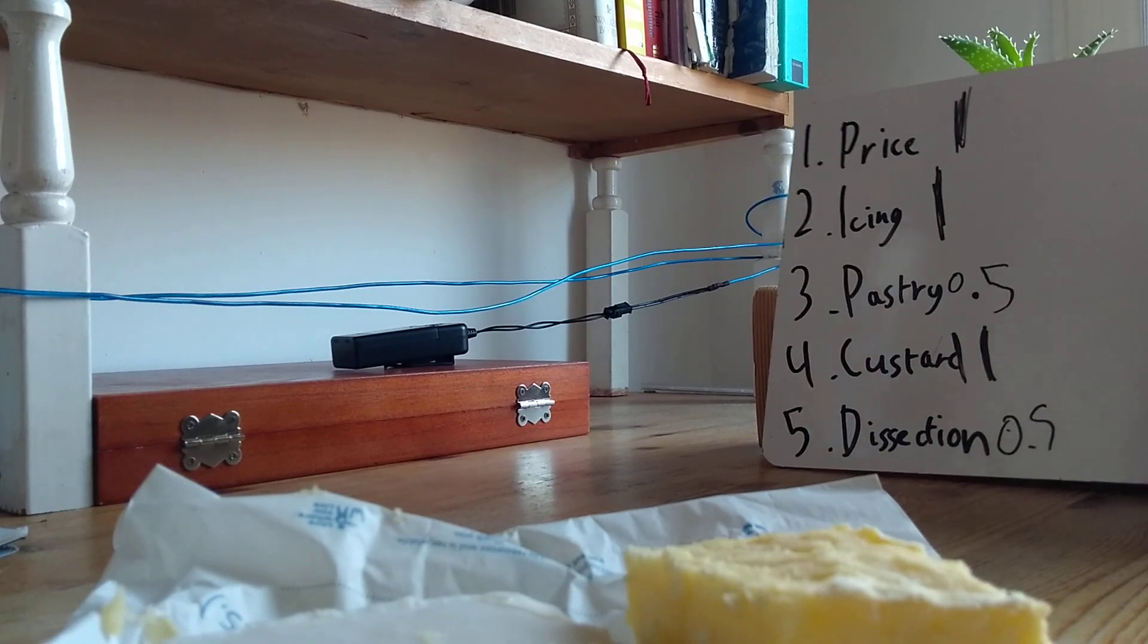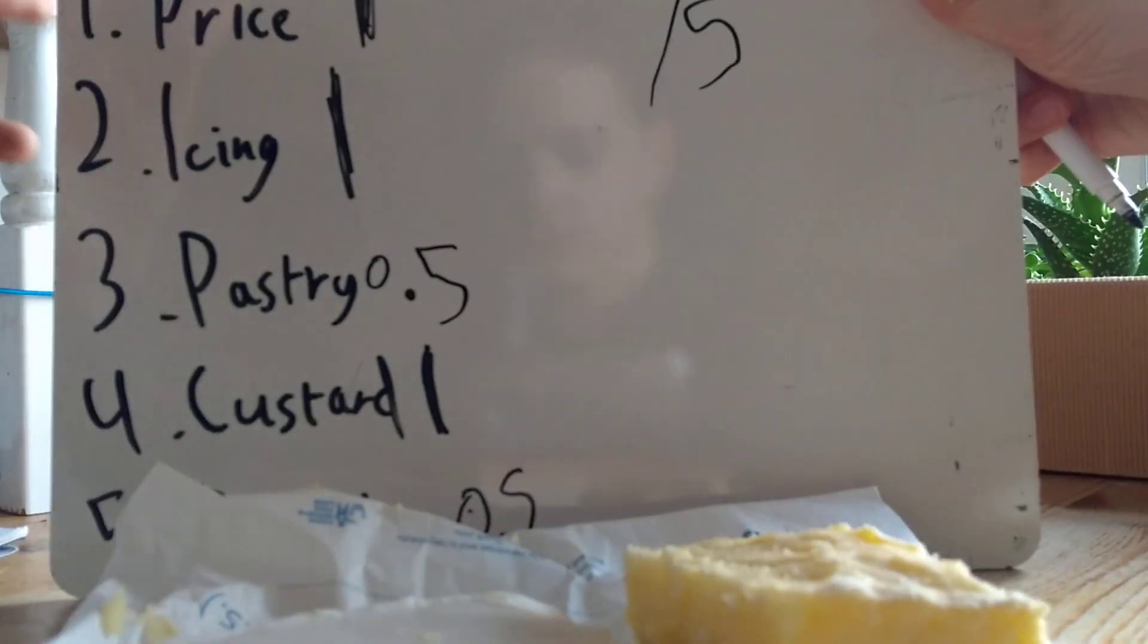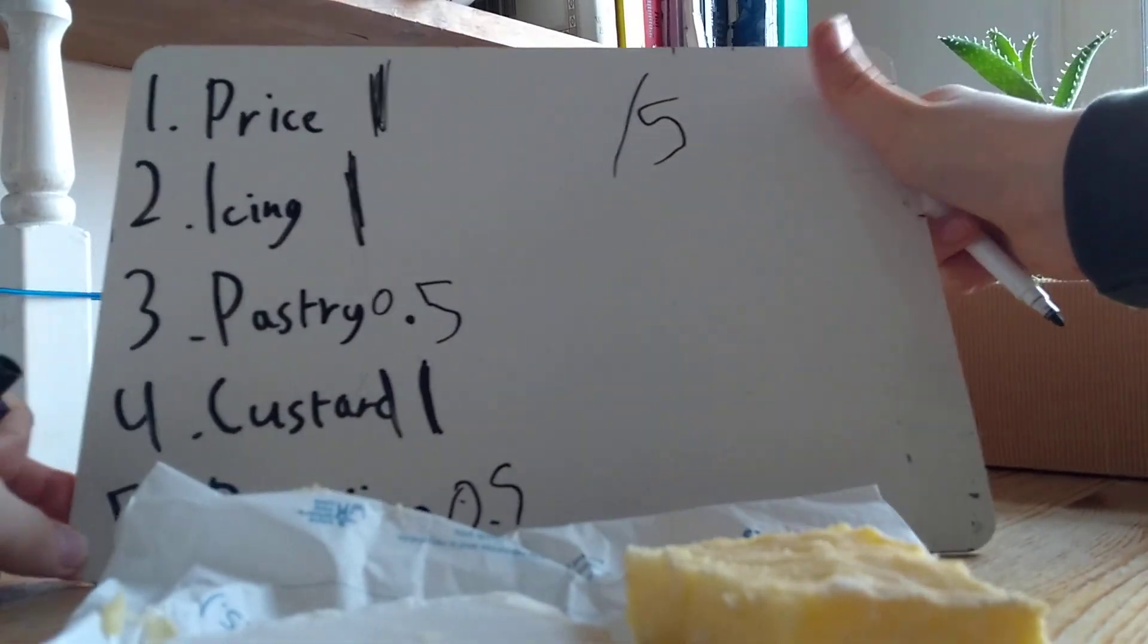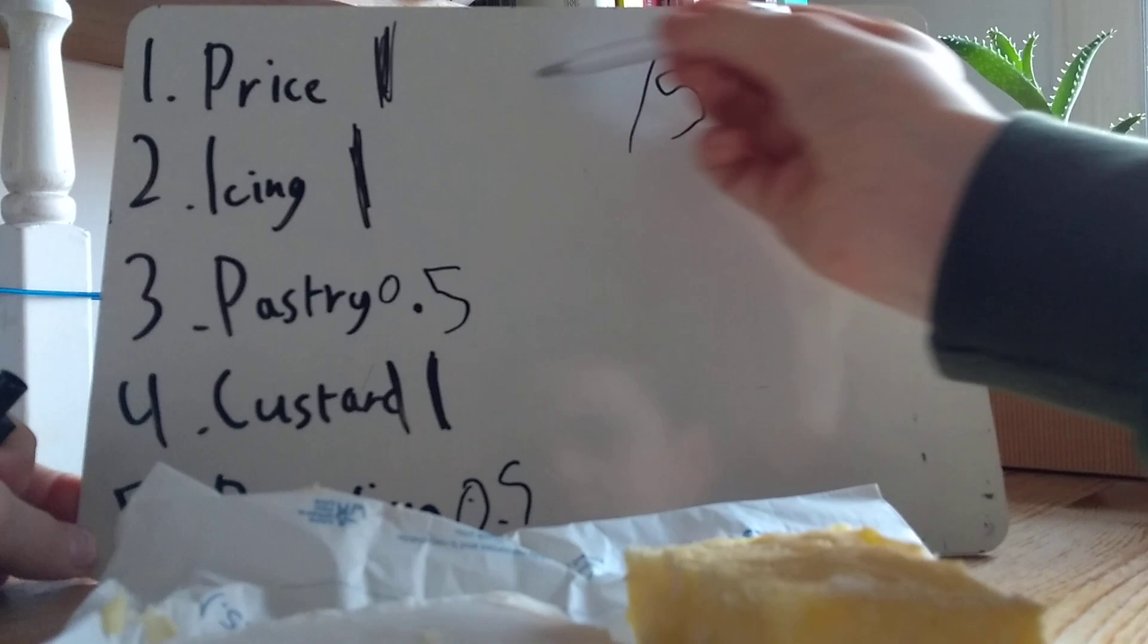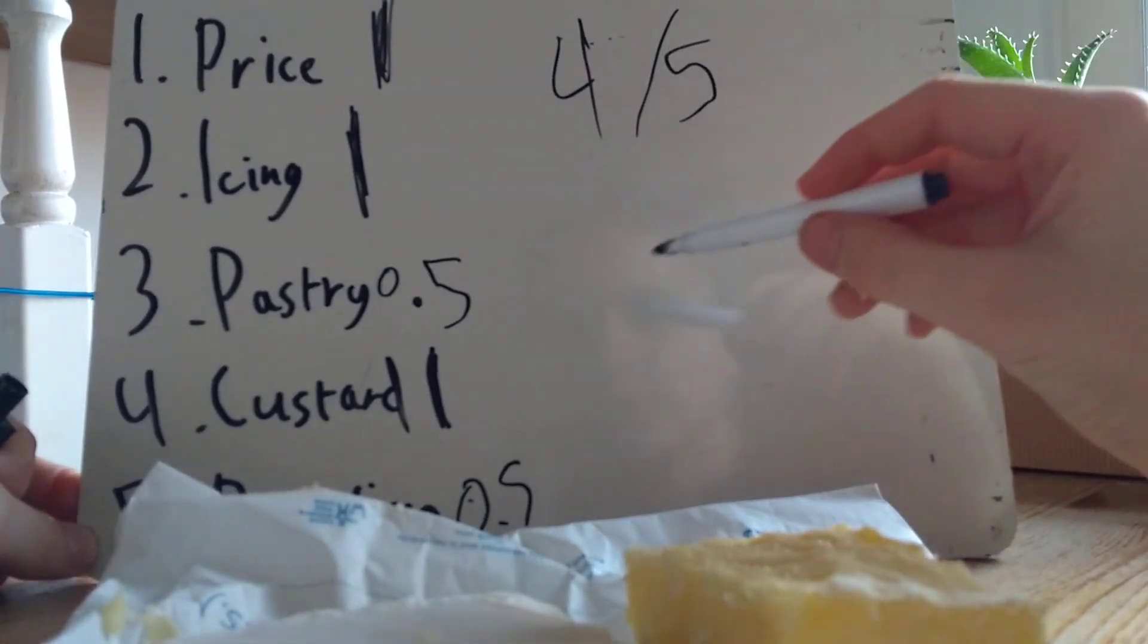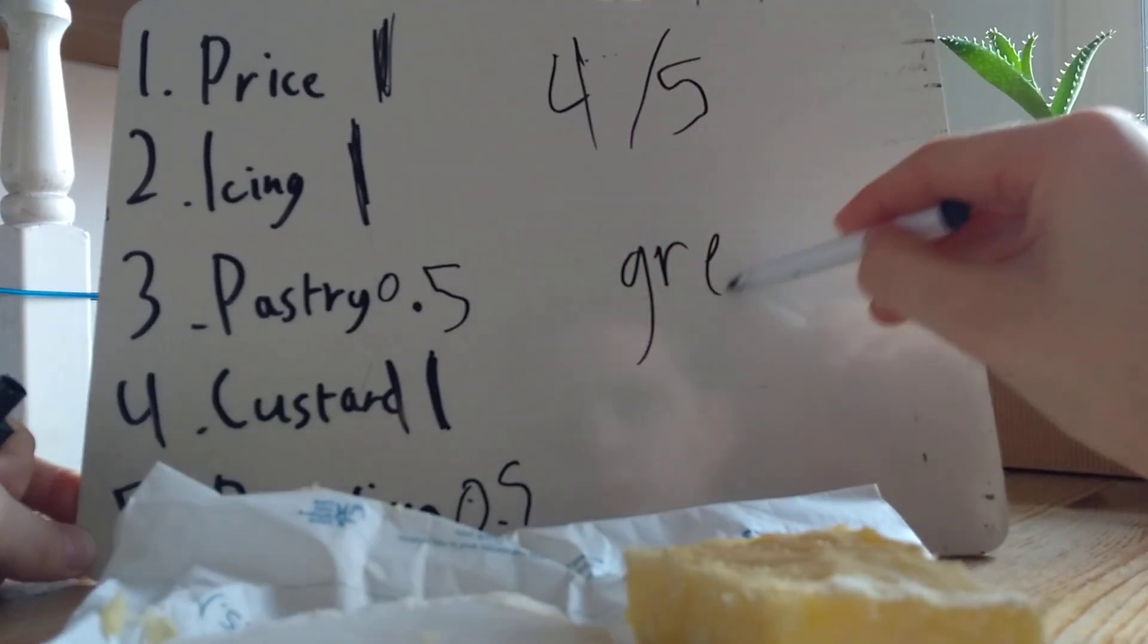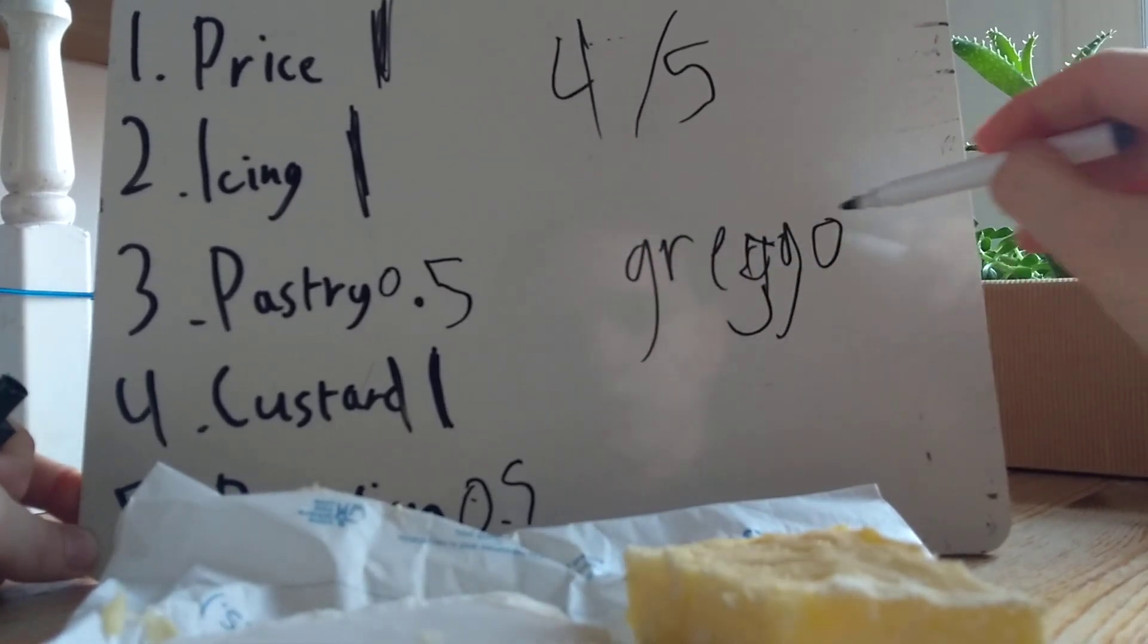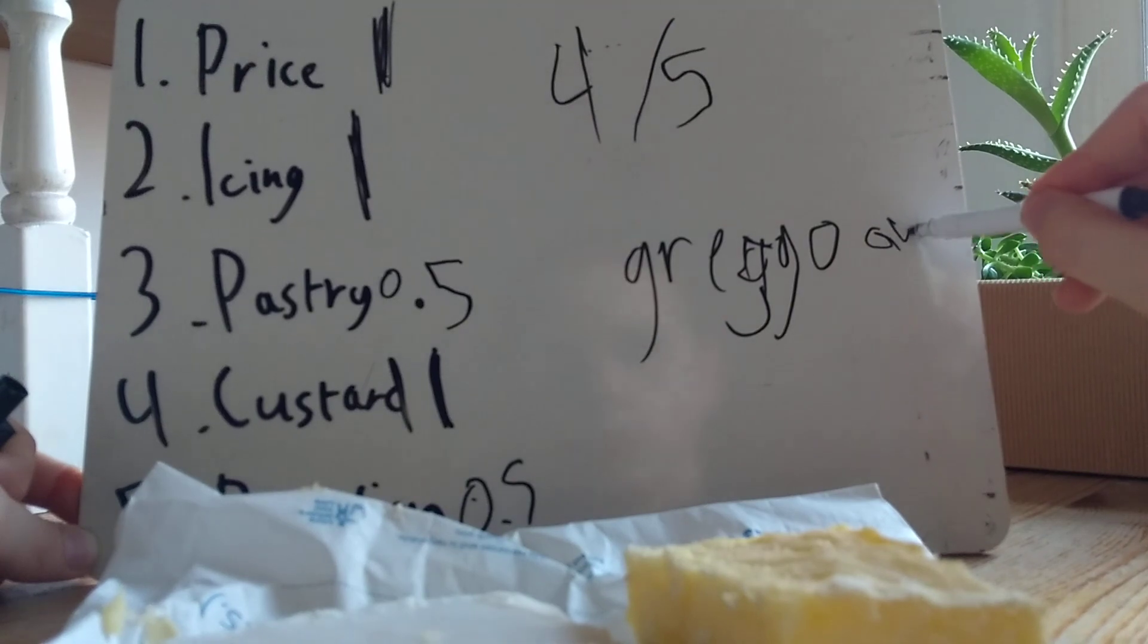So, now let's move this over here. Oh, you cannot see. So, the final score is four out of five. Four Greggs.